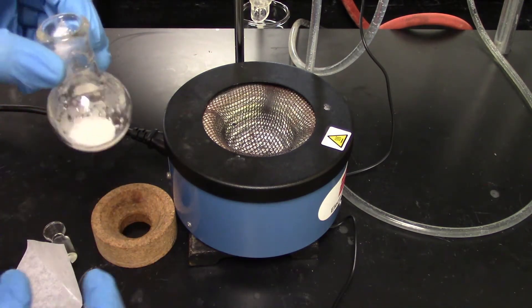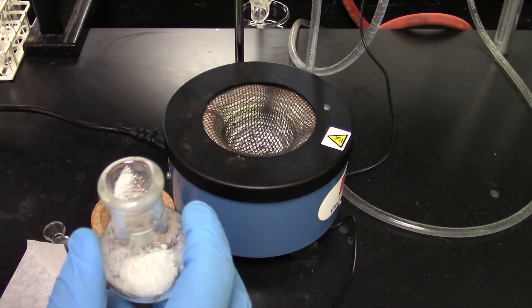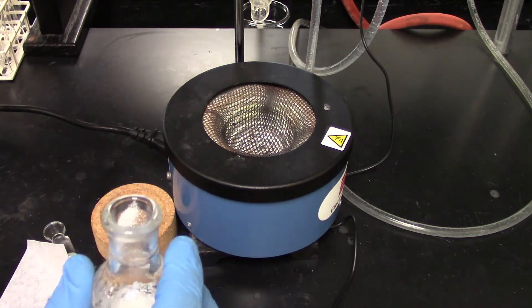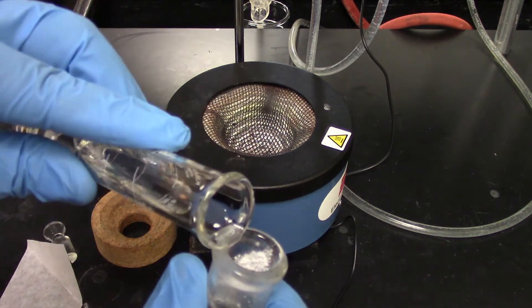Let's get that a good little swirl, and the other thing we're going to do is add a little bit of toluene, especially to wash off the walls there.